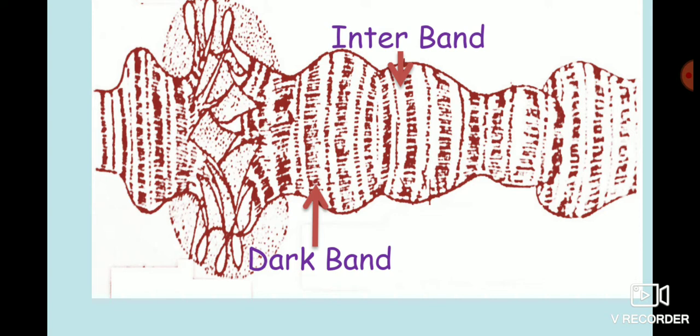This region shows intense gene transcription. At a particular developmental stage, the DNA at certain points uncoils to produce swellings or rings which are called puffs. As these puffs were discovered by Balbiani, they are also called Balbiani rings.